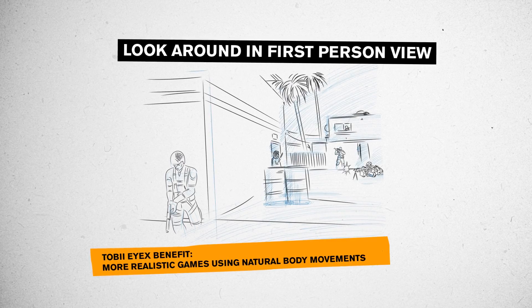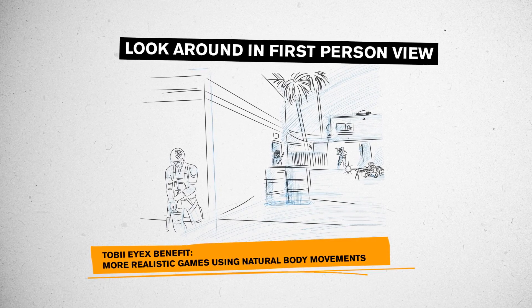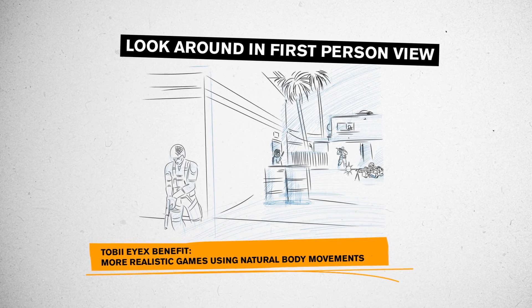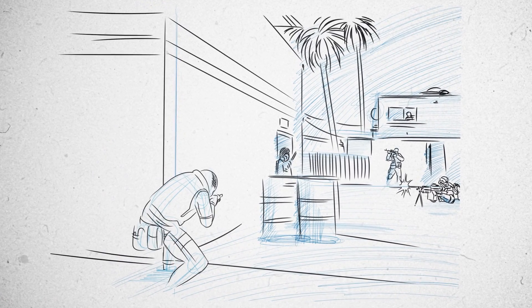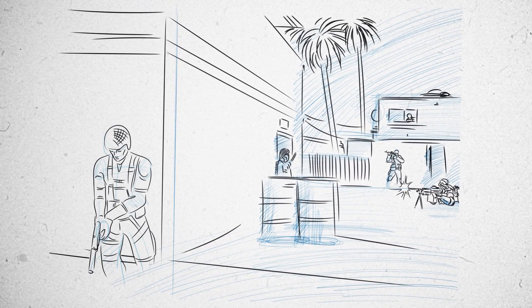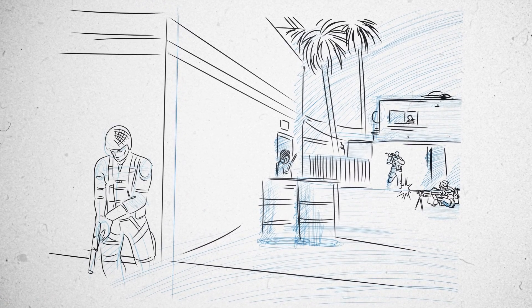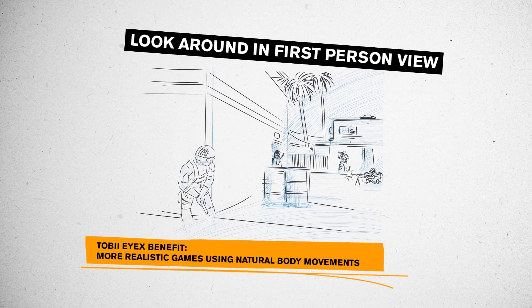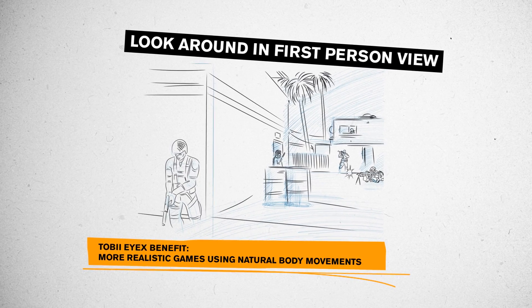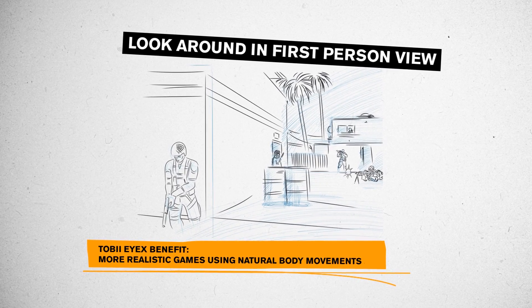Look Around in First-Person View: In a first-person shooter game, eye tracking allows you to look around corners, hide behind counters, or lean over edges, independently from the mouse pointer.